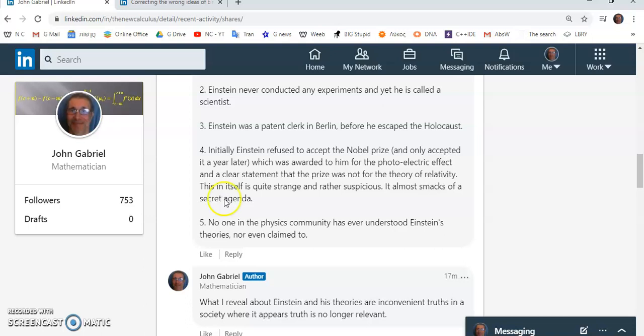This, in itself, is very strange to me, and rather suspicious. It almost smacks of a secret agenda. Why would they have to state that it was not for the theory of relativity? Why could they not just say it's for the photoelectric effect? It's almost as if there are things going on in the background that nobody was meant to know. And ironically, most dimwits and ignoramuses on the planet don't even know about the photoelectric effect. So, they've all been convinced that it was because of the theory of relativity that he was awarded the prize.